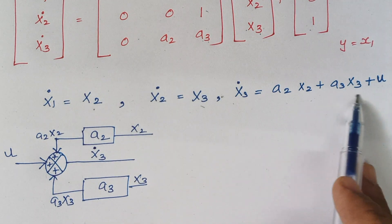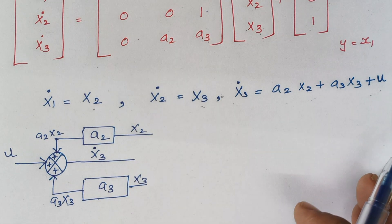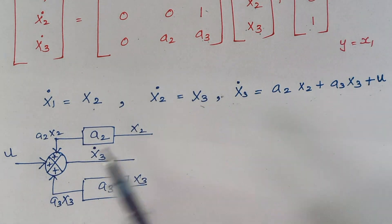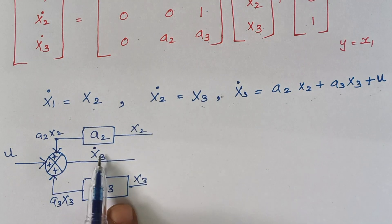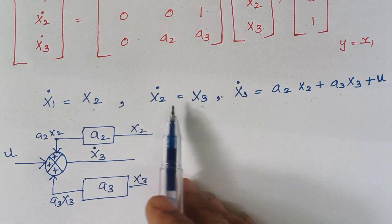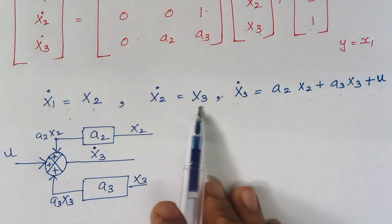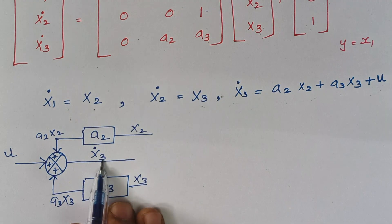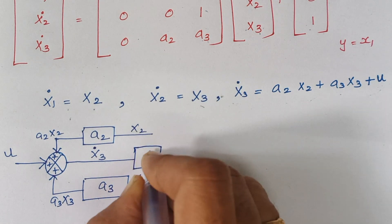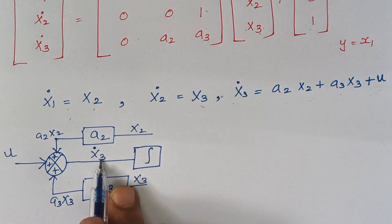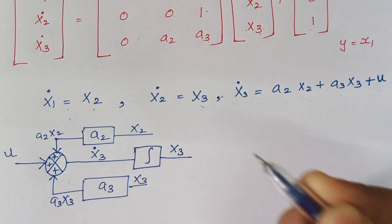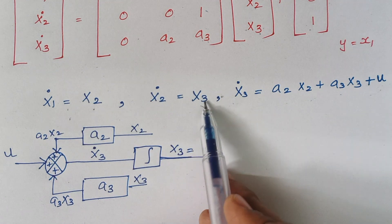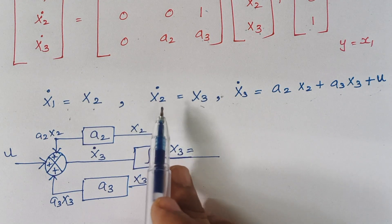So I have drawn this expression in the form of a block diagram. We have framed the x3_dot expression as a block diagram, and next we proceed to the remaining two expressions. We have x3_dot here, and in those two expressions we also need the term x3. To get x3, when you integrate x3_dot you get x3. So include a box with an integrator — when x3_dot is integrated, the output is x3.